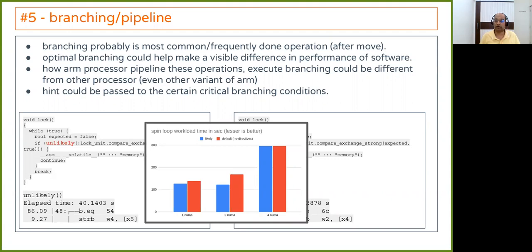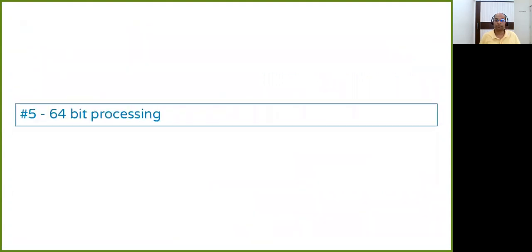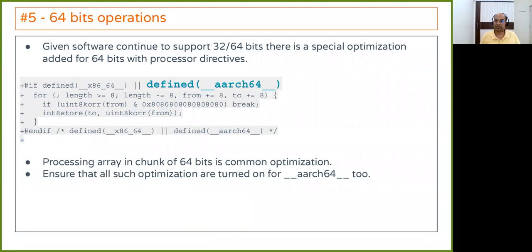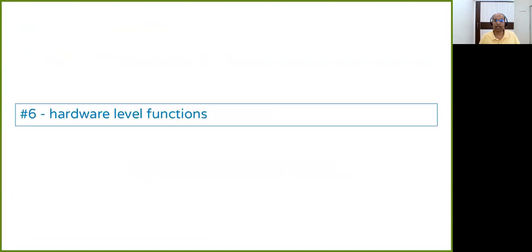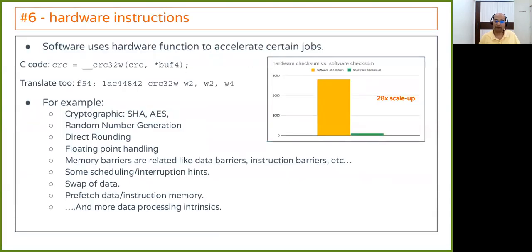The sixth tip is 64-bit processing. Most ARMv8 processors are 64-bit. There are loops inside software tuned to take advantage of 64-bit operations — for example in MySQL, certain loops are enabled only for x86_64. We need to make sure they are also enabled for ARM-based processors.